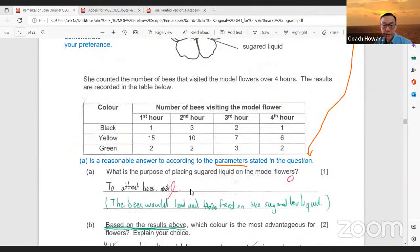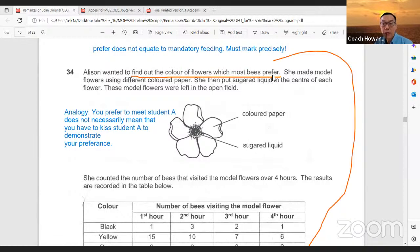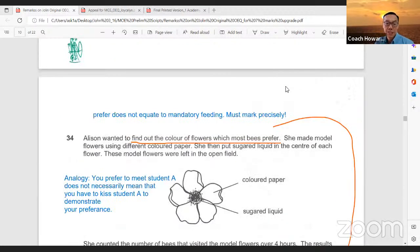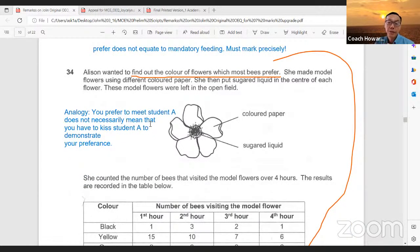This question is actually quite fascinating. What is the purpose of placing sugared liquid on the model flowers? Let's see the candidate's answer. Actually, she wrote to attract bees. Technically, she's correct because the answer given is the bees would land and feed on the sugar liquid. However, this is my argument in favor of the candidate's answers.